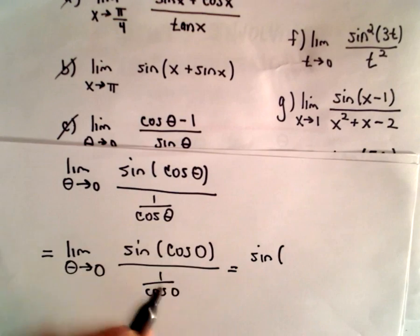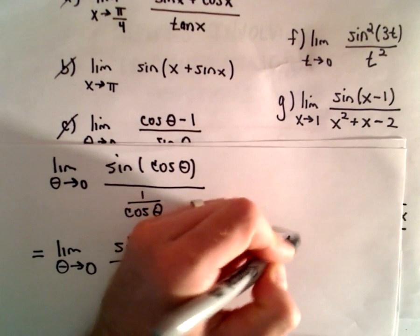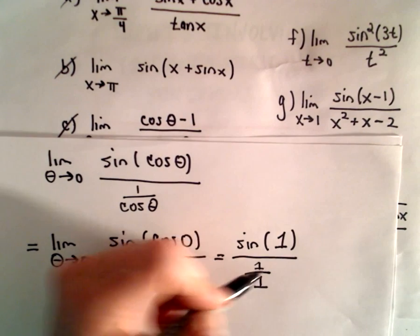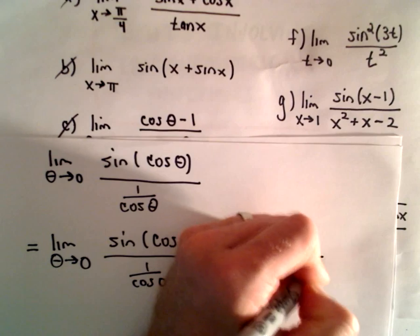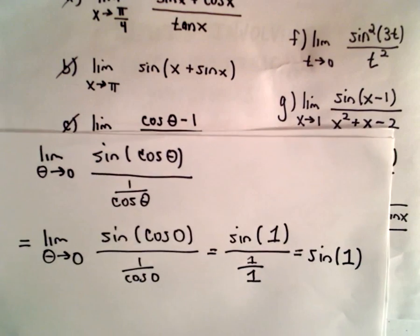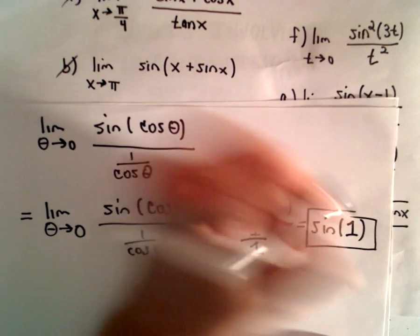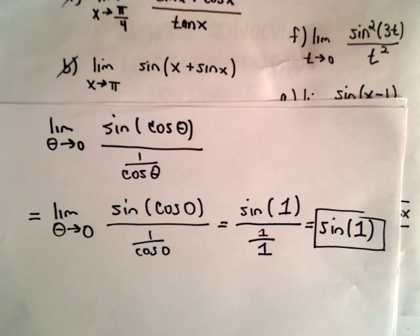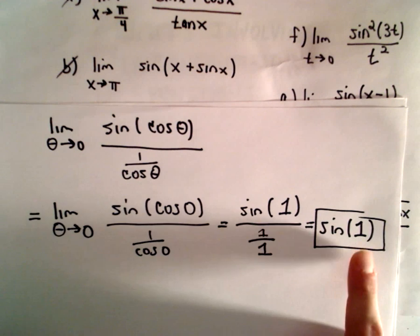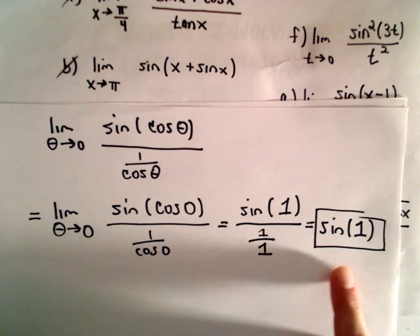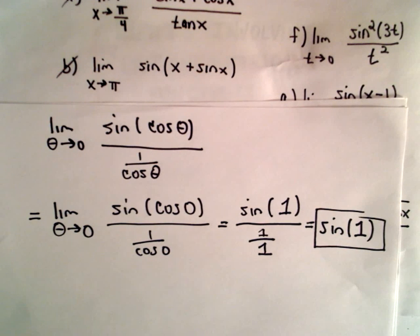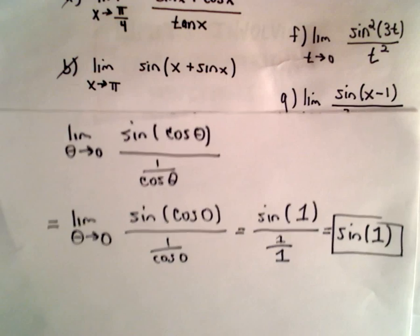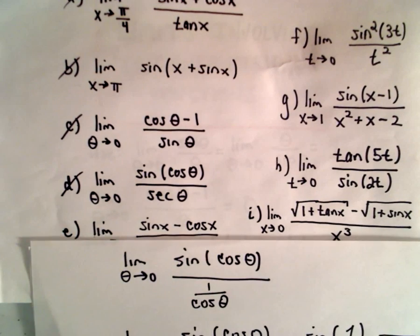Cosine of 0 is simply positive 1. So in the denominator we have 1 over 1, which is just 1. We're left with sine of 1 over 1, which is simply sine of 1. Without a calculator, the only values I can easily plug into a trig function are common ones like pi/2, pi/4, pi/3, pi/6. One doesn't fit those, so I would leave the solution as sine of 1, because that's exact. Part D was another problem where we could simply plug and chug.